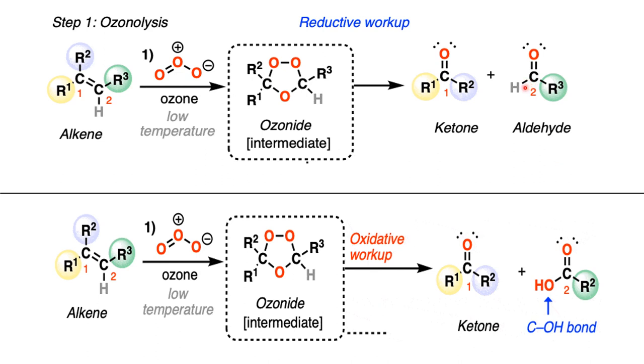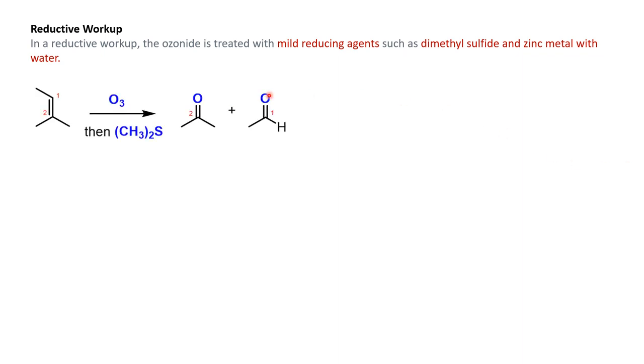The first case, the ketone remains the same, whereas when we compare with the aldehyde, the aldehyde is converted to carboxylic acid. What is the reagent that is used in both these workups? In case of a reductive workup, dimethyl sulfide and zinc metal are the reagents that are popularly used. In this particular reagent, dimethyl sulfide is acting as a mild reducing agent and is cleaving the carbon oxygen double bond and two carbon oxygen bonds are formed in the products.